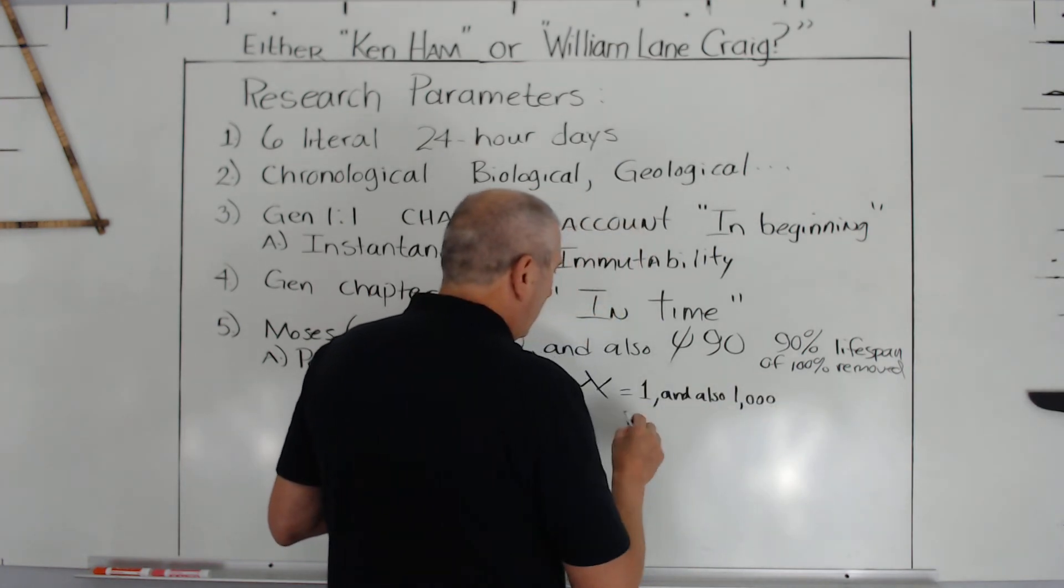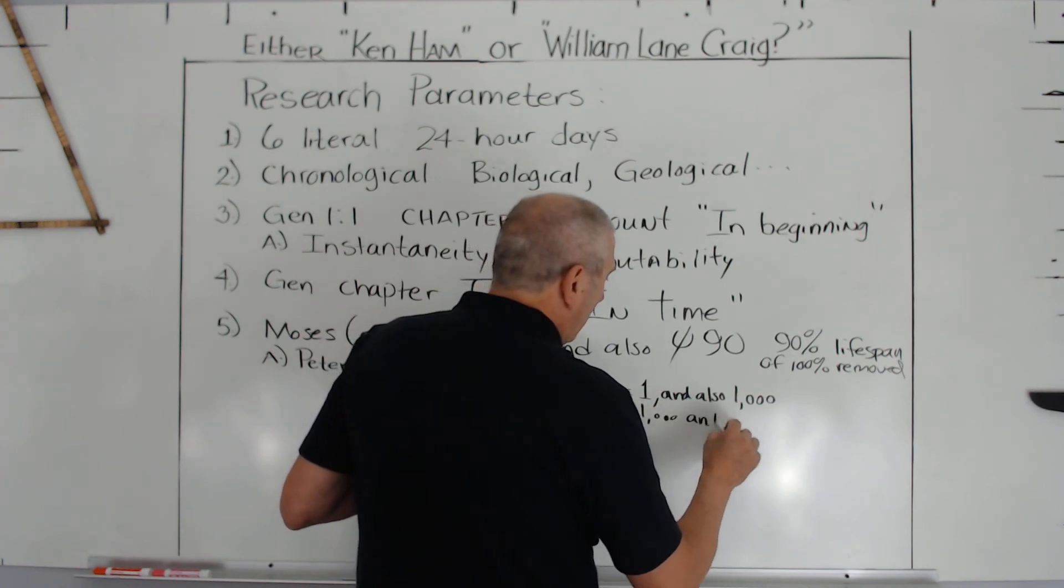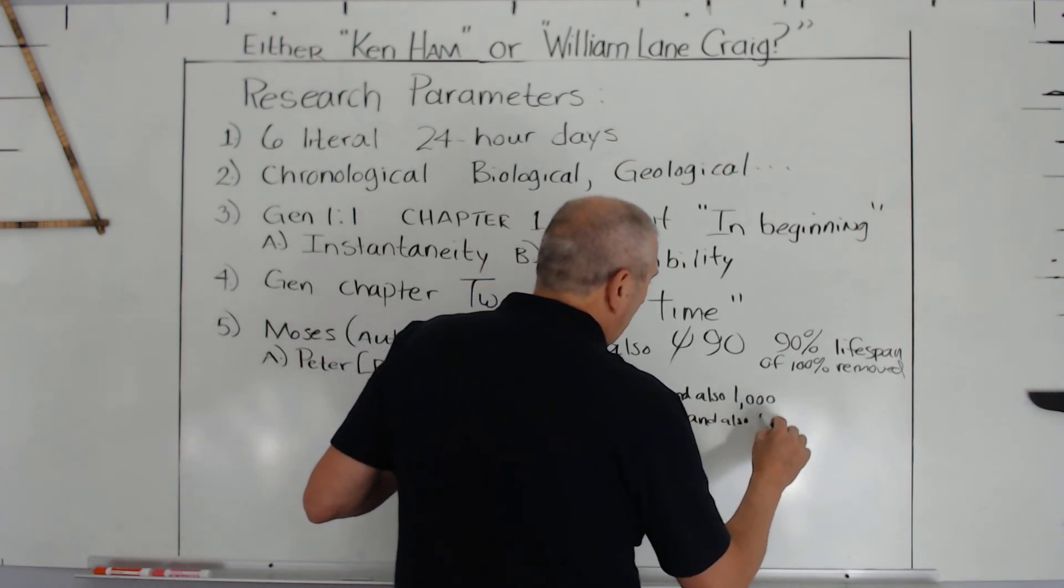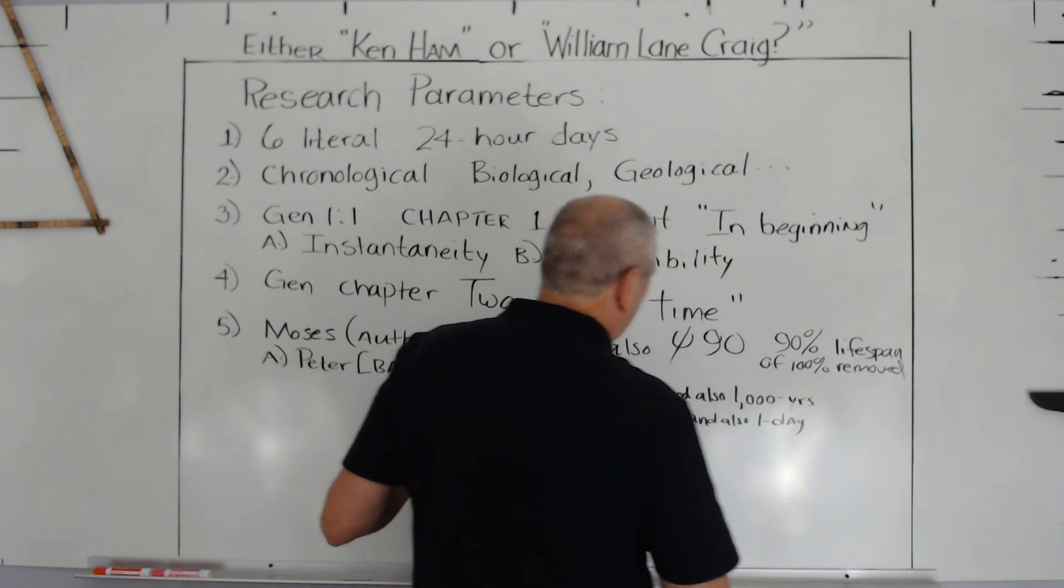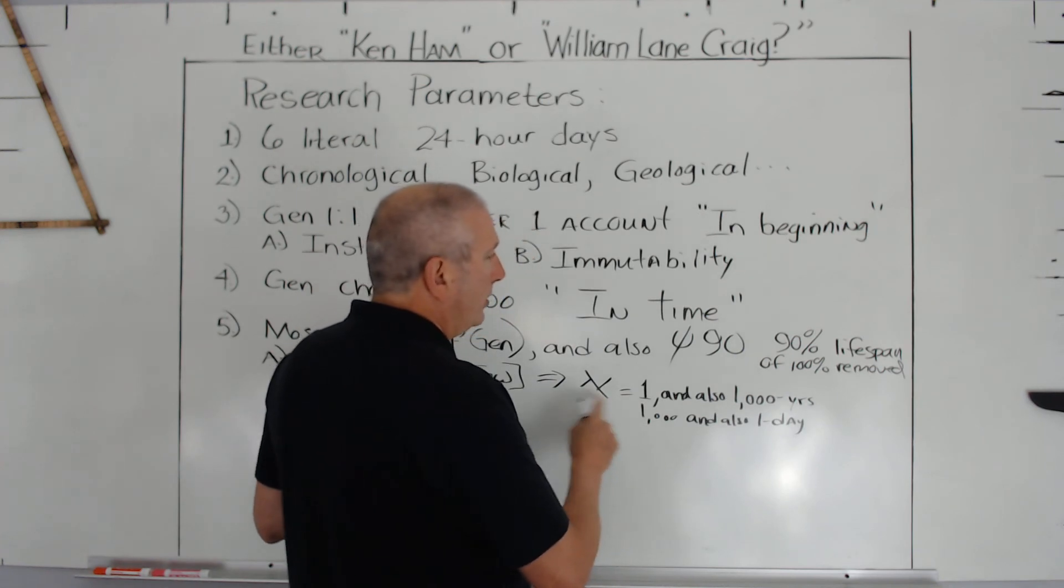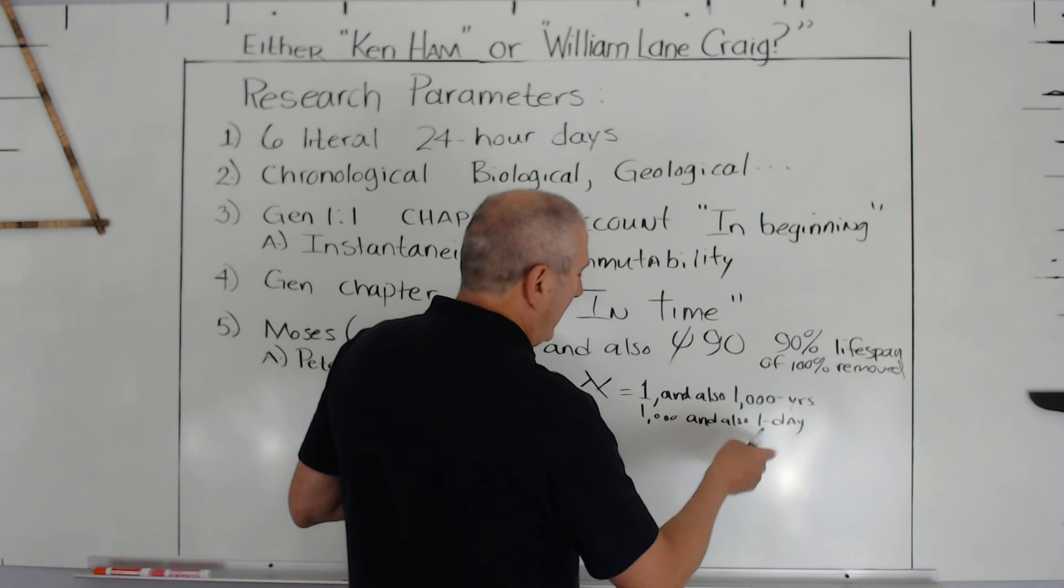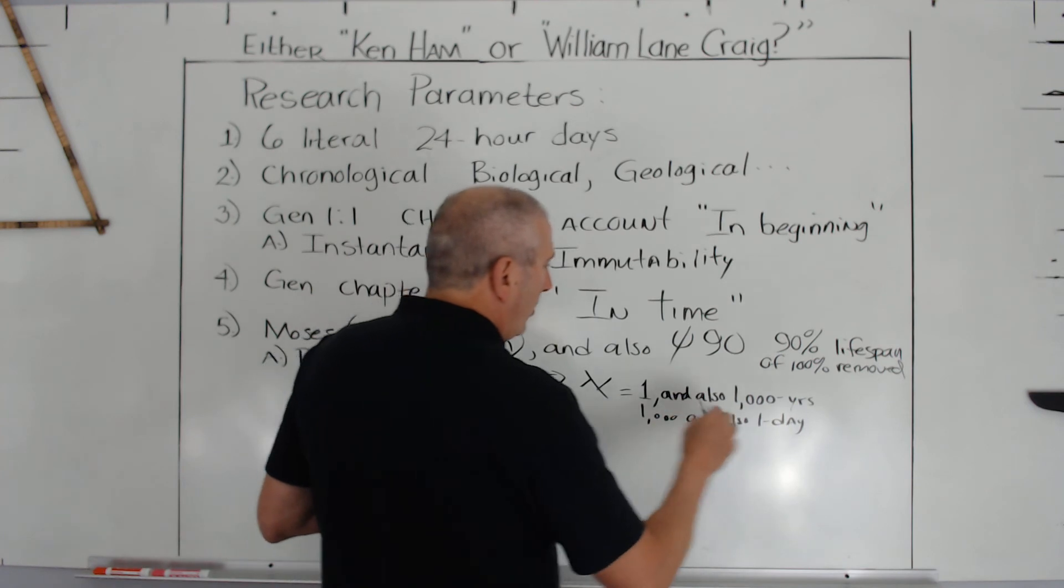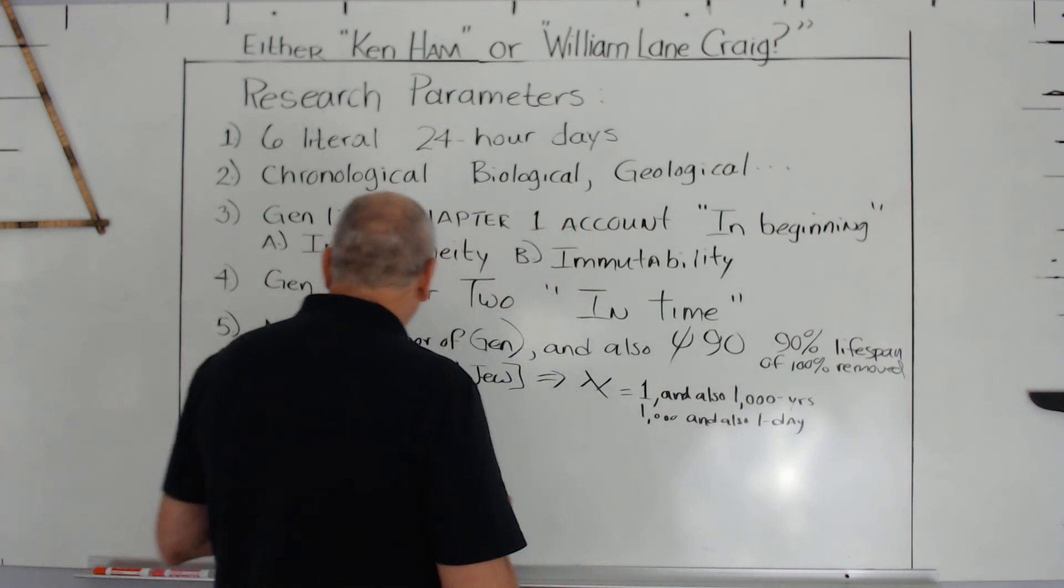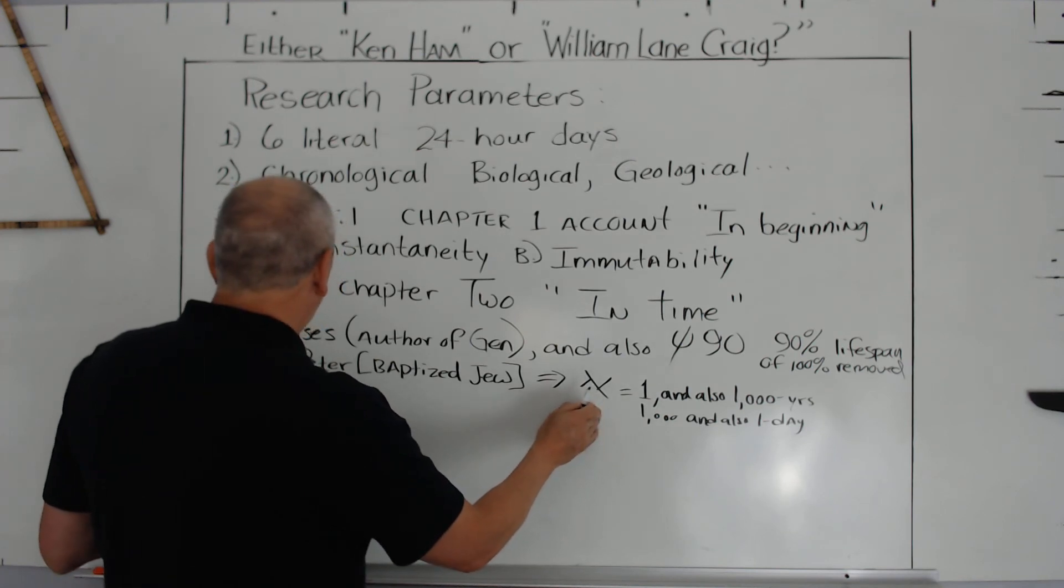It says equals one and also one thousand. Peter said it's also one thousand and also one day, that is, in one day. So one day is a thousand years. Peter said that, but he was using what we already knew with the letter Aleph - one as is and also a thousand, a thousand also one. So he wrote it out, Peter did, that one day is like a thousand years and a thousand years is a day. So we have that baptized Jew. We have the Hebrew language.